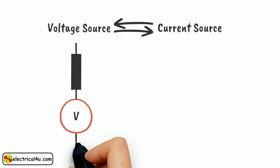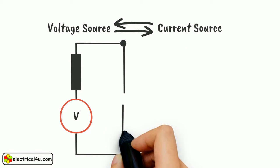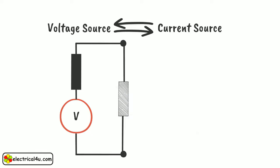A voltage source is equivalent to a current source and vice versa if they produce equal values of load current and load voltage when connected to the load. They should also provide the same open circuit voltage and short circuit current.